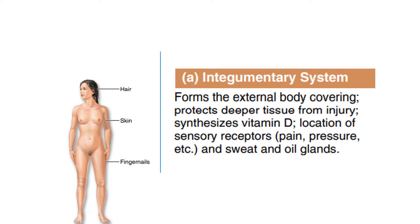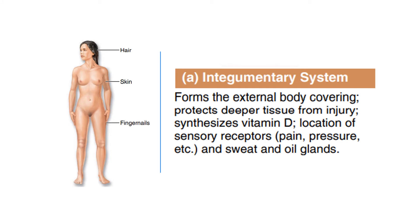Starting with the integumentary system. It forms the external body covering which protects deeper tissue from injury, synthesizes vitamin D, and contains sensory receptors such as pain and pressure receptors. Sweat and oil glands are also found in the integumentary system. It waterproofs the body and cushions and protects deeper tissues. Sensory receptors in the skin alert us to what is happening at the body surface. Parts of the integumentary system include skin, fingernails, and hair.